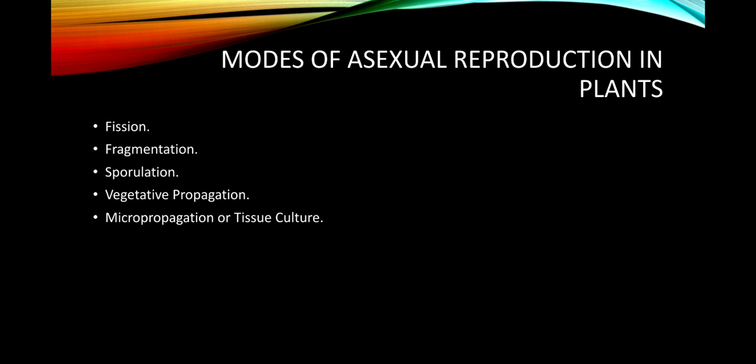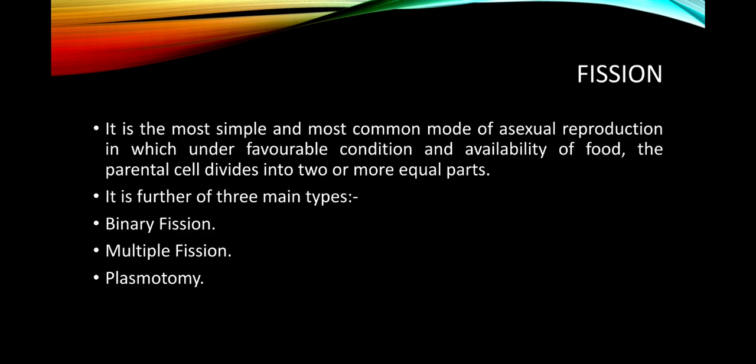Fission is the most simple and most common mode of asexual reproduction. Under favorable conditions and availability of food, the parental cell divides into two or more equal parts. It requires favorable conditions and an abundance of food — if enormous amounts of food are available, the process of fission becomes very fast.